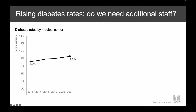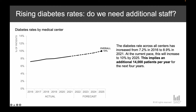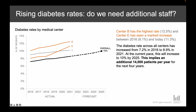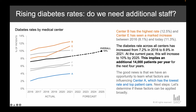Looking across all medical centers combined, we've seen a steady increase year over year in the diabetes rates of our patients, and today that rate is at 8.6%. We forecasted this out and predict that by 2025 we will be at 10%, or one in 10 patients across all clinics will be diabetic — translating to an additional 14,000 patients per year for the next four years. Keep in mind, this is the overall average. If we look at individual medical centers, we have three centers with even higher rates: Center B is the highest at 12.5%, and Center E has seen a marked increase since 2016 and is currently at 11.3%. We also have medical centers with lower rates, but they each have an increasing trend as well.